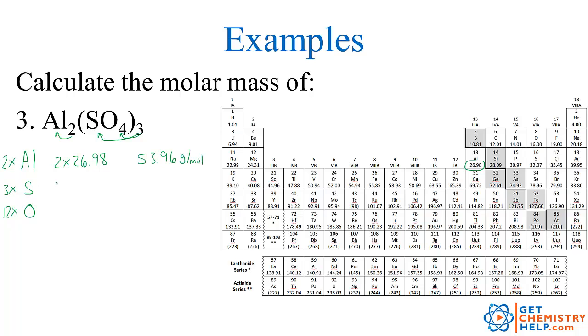How about sulfur? Well three sulfurs. Each sulfur has a mass of 32.07. So 32.07. That's a total of 96.21.